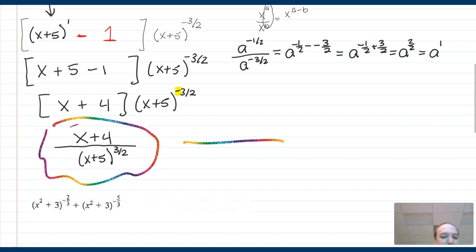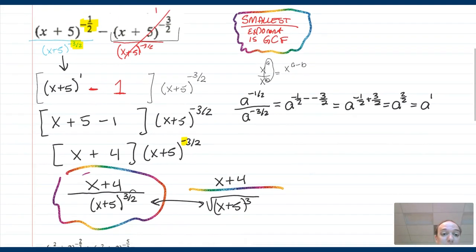By the way, you optionally can write the bottom as the square root of x plus five to the third under x plus four. These are fine. Both are equivalent. They mean the same thing, whichever you prefer. I think I prefer the exponent version, but you might prefer the root version. So that's how you do a fractional exponent factoring problem.